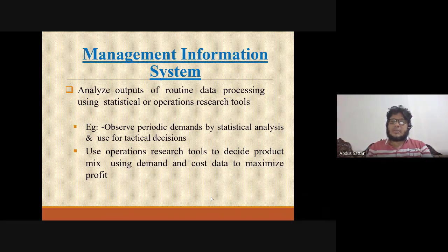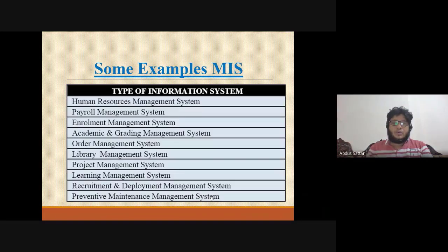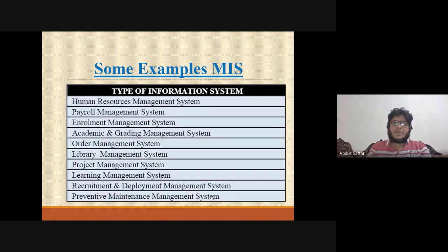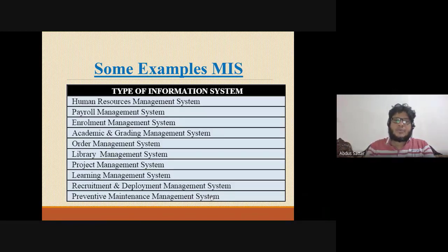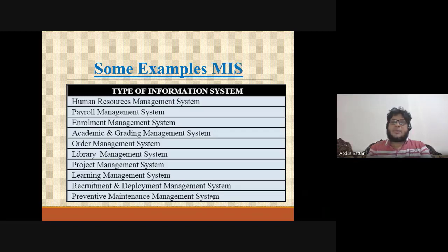I am using the example of human resource management, payroll management, enrollment management, order management, lab management, school management, hotel management, air legislation management, learning management, deployment management. This system is called a managerial information system — that means we manage the information we need to do.